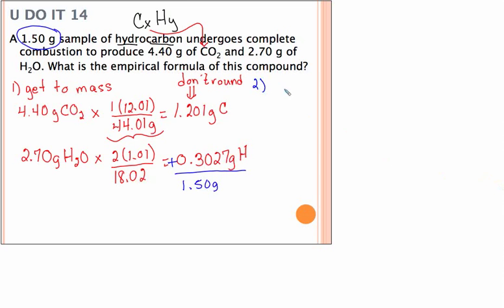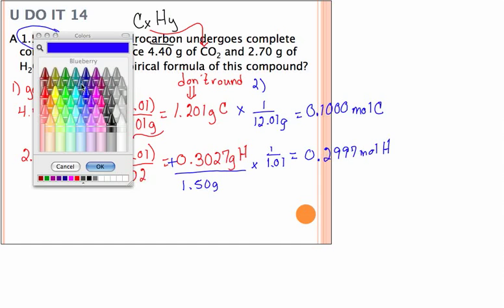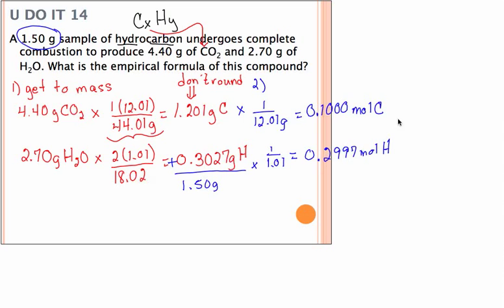So the next part, remember, get to mass, then it's mass to moles. So mass to moles multiply by 1 over the molar mass. And so for hydrogen, it's going to be 1 over 1.01. And that gives me 0.1000 moles of carbon and 0.2997 moles of hydrogen. And like I said, you want to carry those out at least four significant figures. Now, get to mass, mass to moles. Now what we want to do is divide by the smallest. In this case, it's our carbon. So I'm going to divide them both by 0.1.